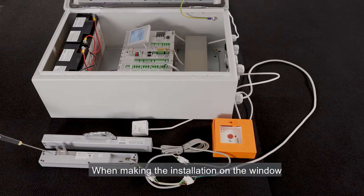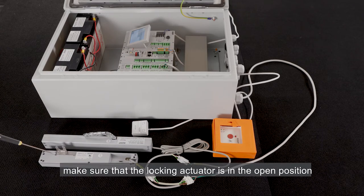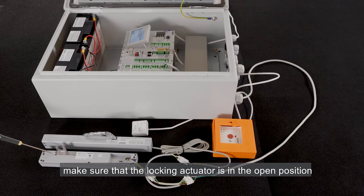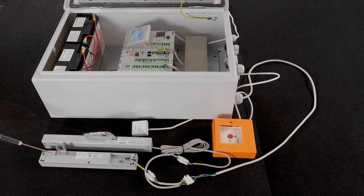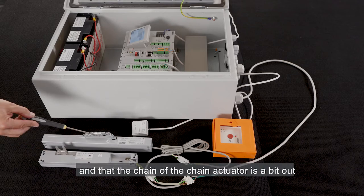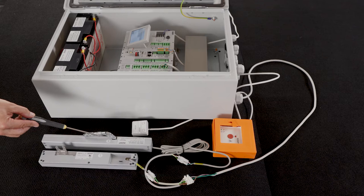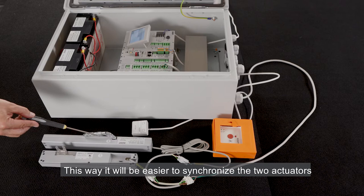When making the installation on the window, make sure that the locking actuator is in the open position and that the chain of the chain actuator is a bit out as it comes from the factory. This way it will be easier to synchronize the two actuators.